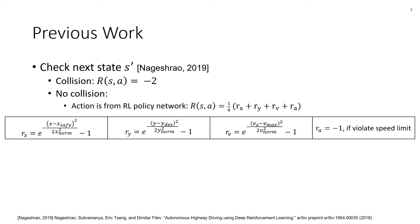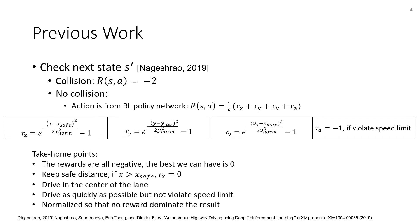Here are the reward functions. First of all, the rewards are all negative — the best we can have is zero. We want to keep a safe distance with the front vehicle, and we want the agent to drive in the center of the lane and drive as quickly as possible but not violate the speed limit. They are all normalized so that no reward dominates the result, and this policy will be evaluated.